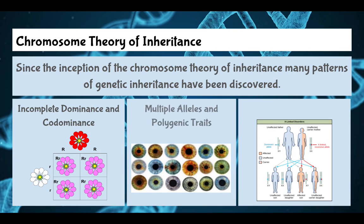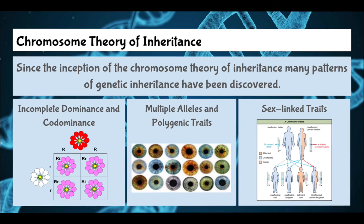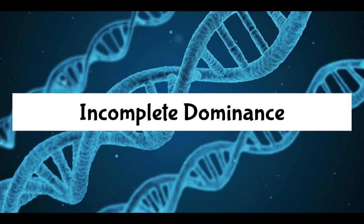The chromosome theory also accounts for multiple alleles and polygenic traits — things that are controlled by more than one gene. And then sex-linked traits, which are traits that appear more often in males or more often in females.